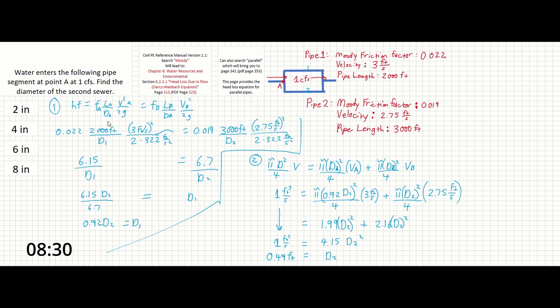And since we were asked to find the diameter of the second sewer, half a foot equals 6 inches.